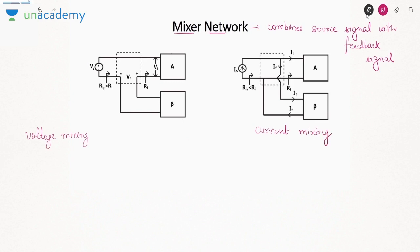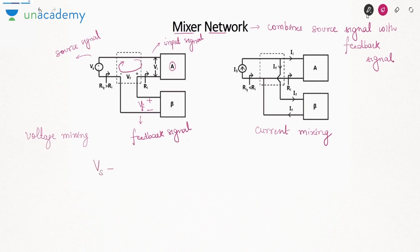The first block diagram shows voltage mixing. The input to the amplifier is the input signal; the source connected is the source signal; the output of the feedback network is the feedback signal. Combining the source and feedback signals gives the input signal. Applying KVL: Vs − Vi − Vf = 0, so Vi = Vs − Vf. The source and feedback voltages are subtracted to give the input voltage — this is voltage mixing.